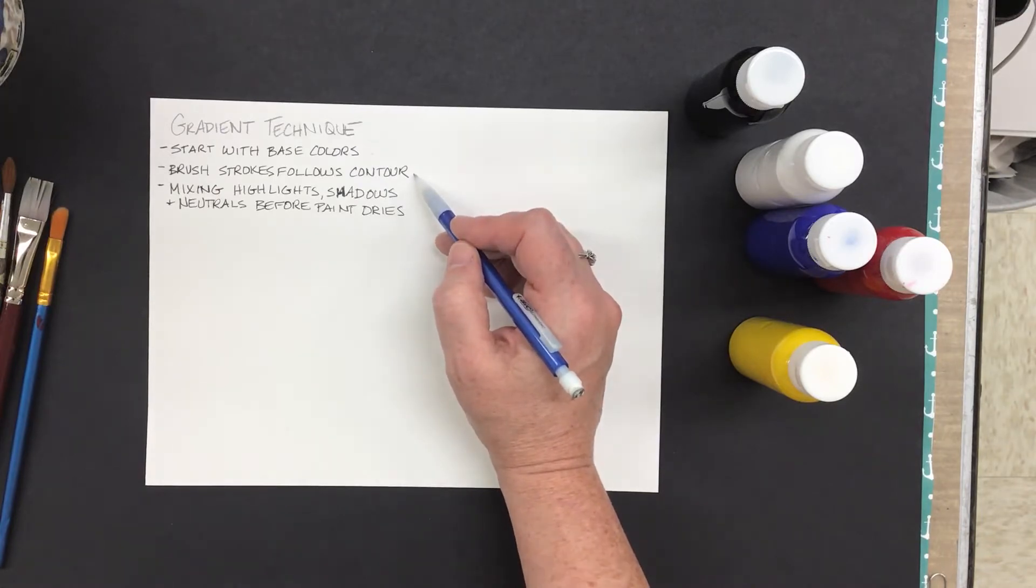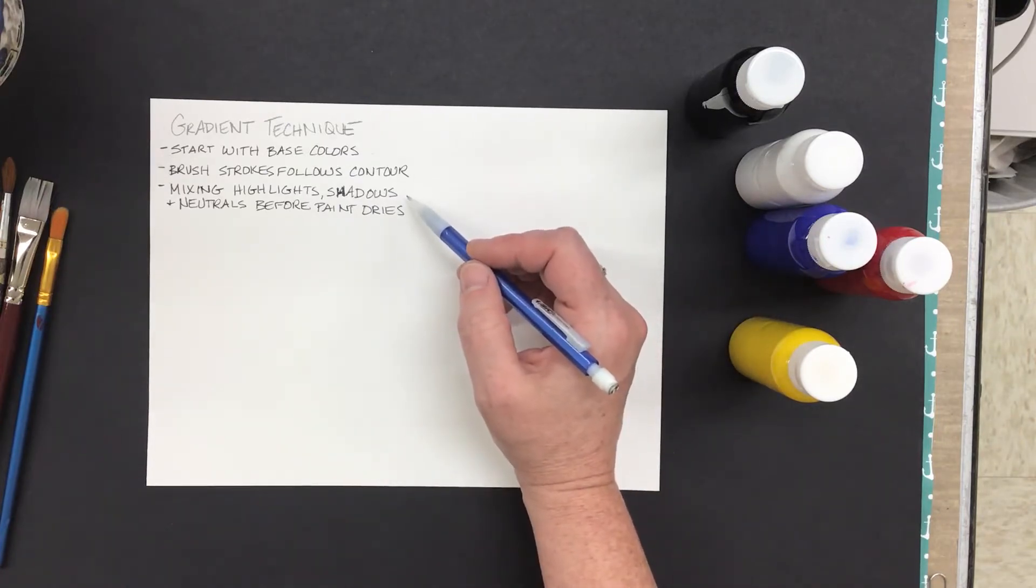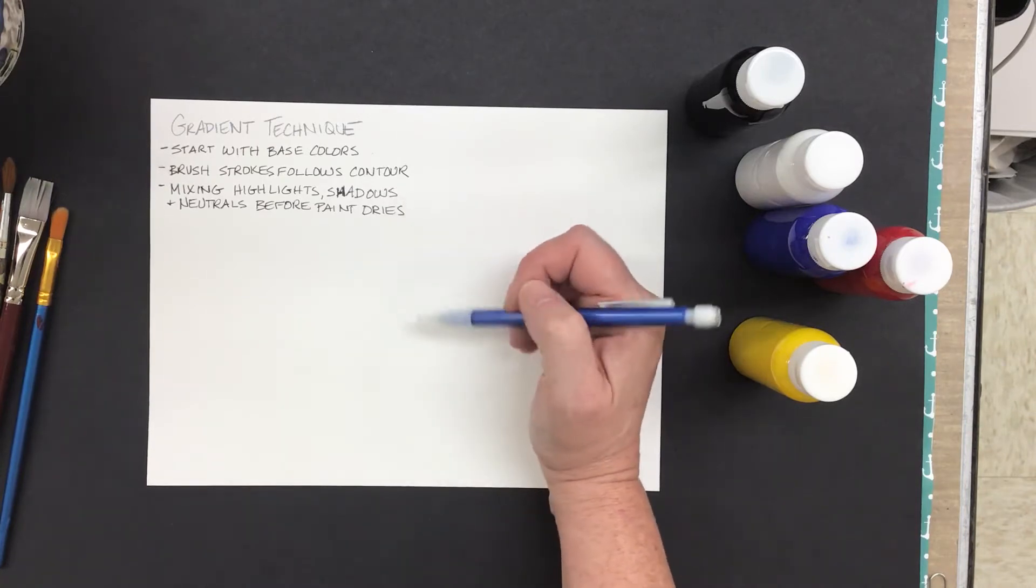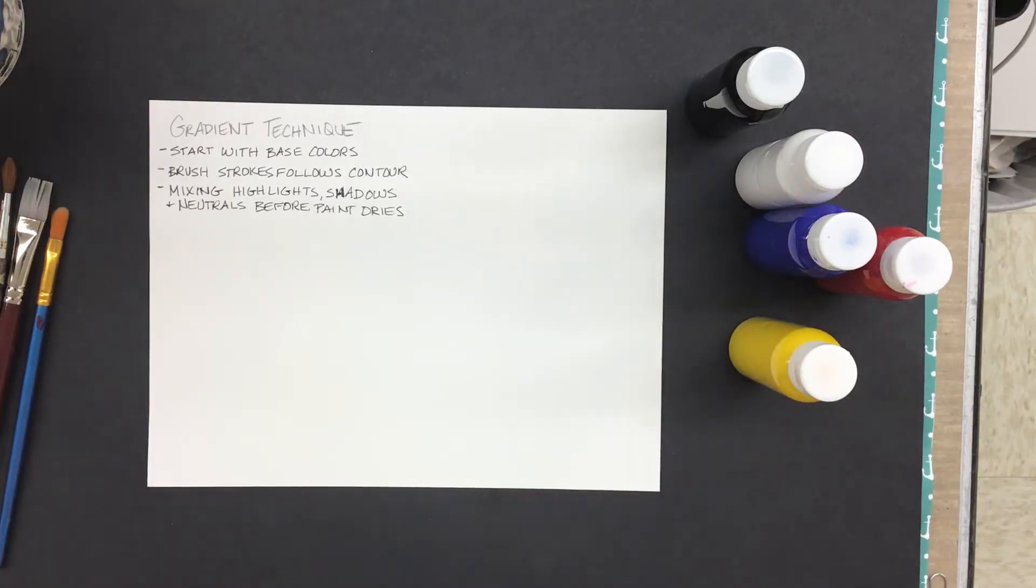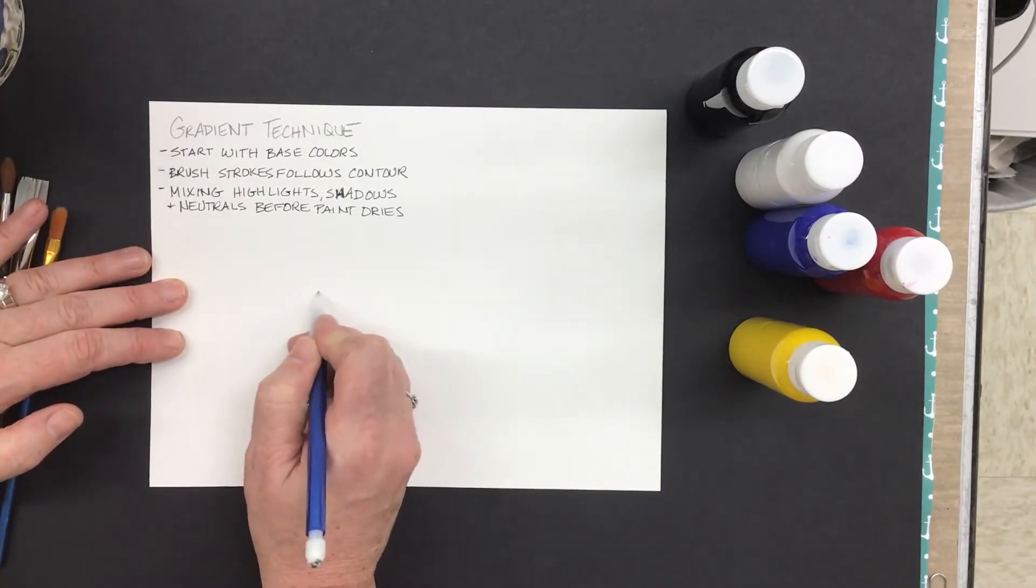Your brush strokes always follow the contour of what you're painting, just like it did with the colored pencil, and you're going to be mixing your highlights, your shadows, and your neutrals right on the canvas before the paint dries. So if you want to pause the video and write those three things down now, you can.